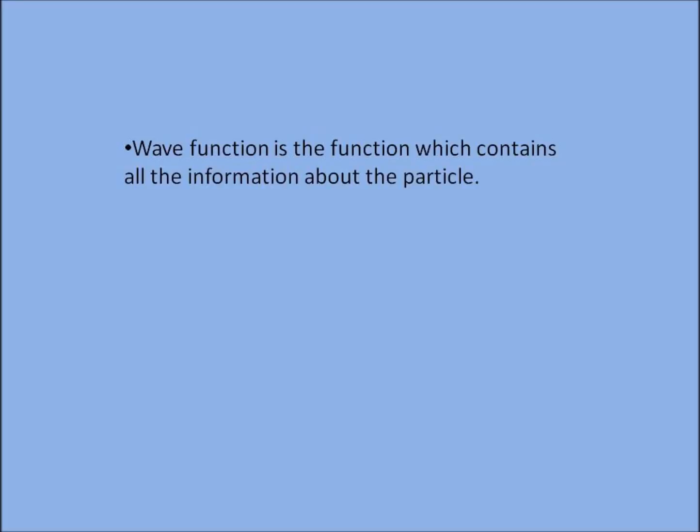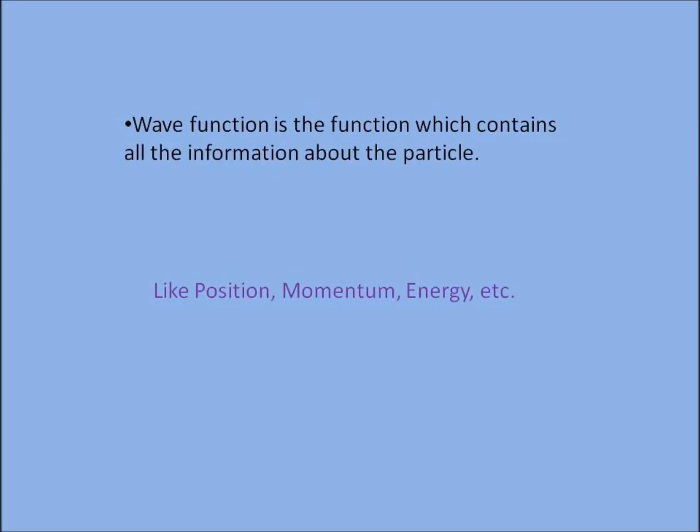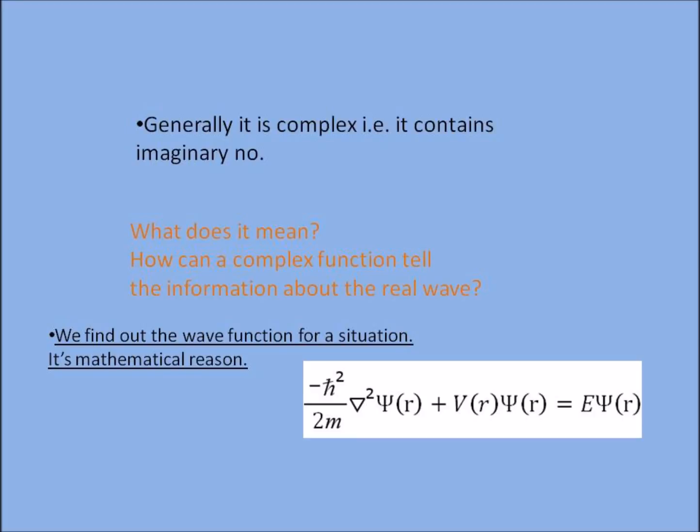The wave function is a function which contains all the information about corresponding particle like position, momentum, energy, or any other physical parameters. Generally wave function is complex, that is it contains imaginary number i, that is square root of minus 1. What does this mean? How can a complex function tell the information about the real wave?